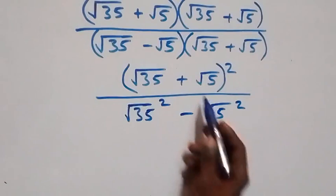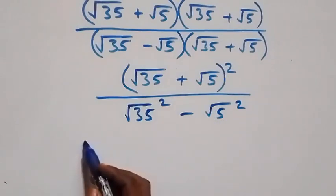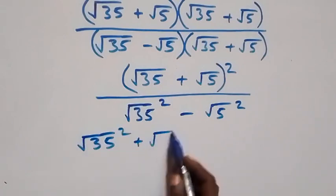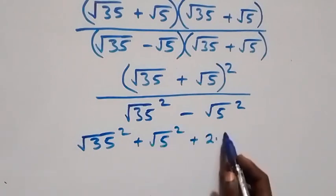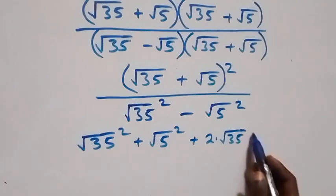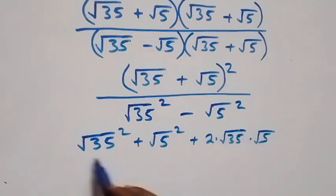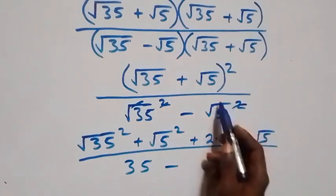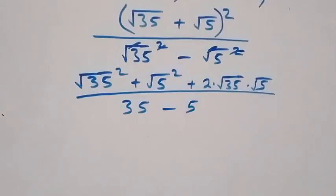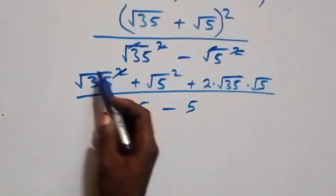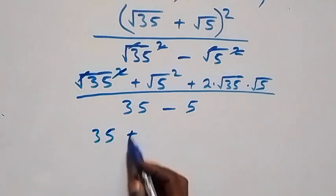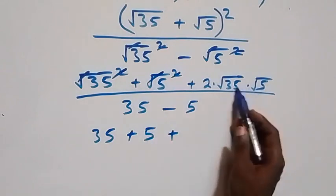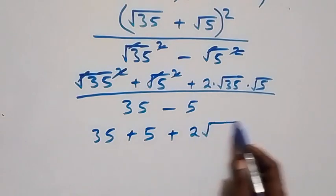Expanding the numerator: (√35 + √5)² = √35 squared plus √5 squared plus 2 × √35 × √5. The denominator: square cancels square root giving 35, minus square cancels square root giving 5.